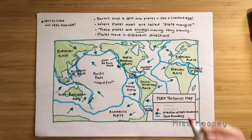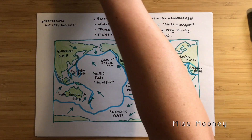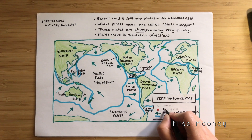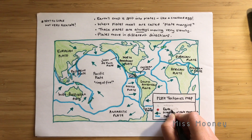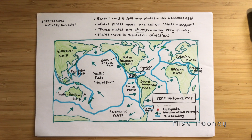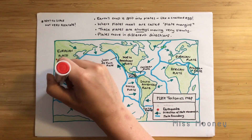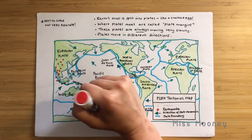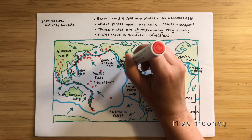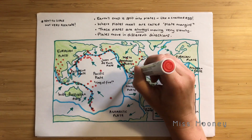Now we're going to look at where earthquakes are commonly found on Earth. While I'm drawing these onto the map, can you spot any patterns? You might be able to pick out some common themes and link these to the plate margins. All of these red dots are showing where earthquakes commonly occur.